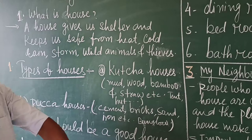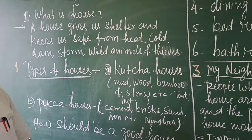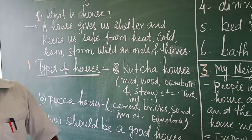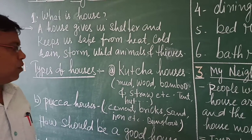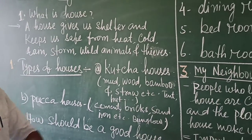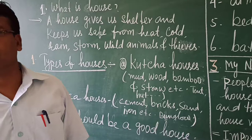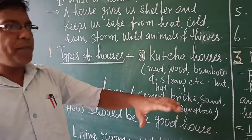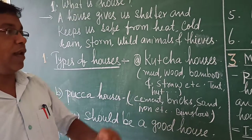First let us see about kaccha houses. These types of houses are found mostly in the village area, because people there are poor and cannot afford to make a pakka house. So they make ordinary kaccha houses with mud, wood, bamboo and straw. Examples of kaccha houses are tents, huts, and bamboo houses. In village areas people live in this type of house and have to repair it each year to keep it well.